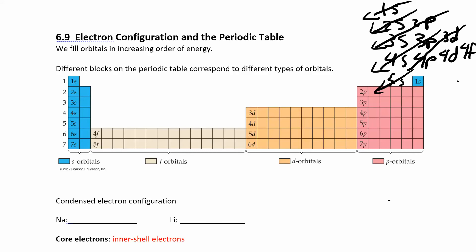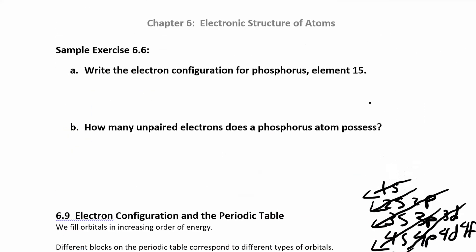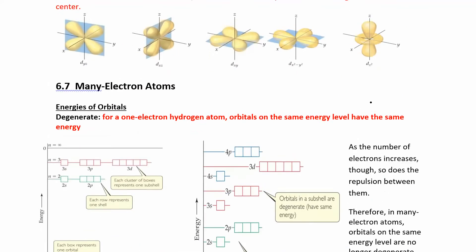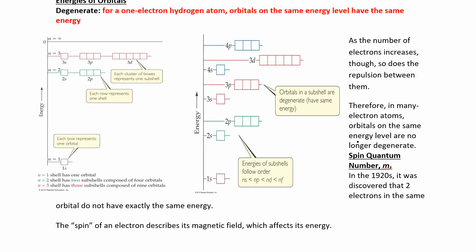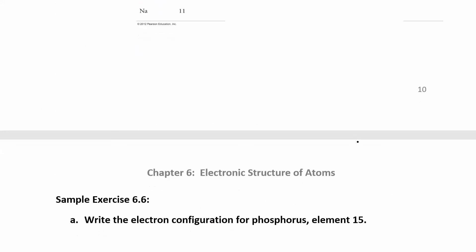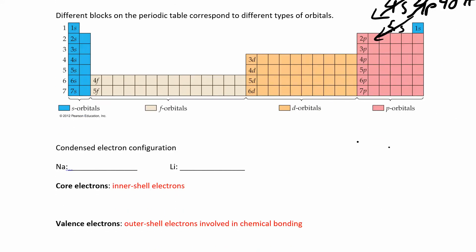So there's three different ways you can find these electron configurations. You can use this method, you can just look at the periodic table, or you can use these energy level diagrams, the orbital diagrams. They should get you the same answer.